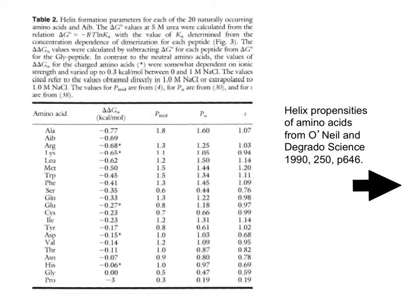O'Neill and DeGrado looked at how certain amino acids exhibit helical propensity. Alanine is known to have a very high helical propensity, as are arginine, lysine, and leucine. However, glycine has zero helical propensity, and proline is actually a helix buster — it is not likely to be in a helix because it would generate a kink in the chain.